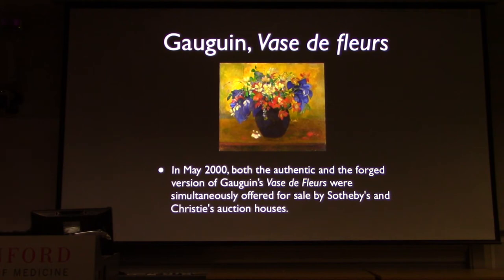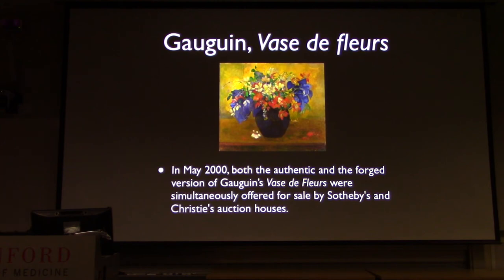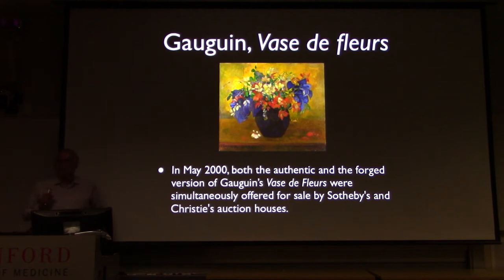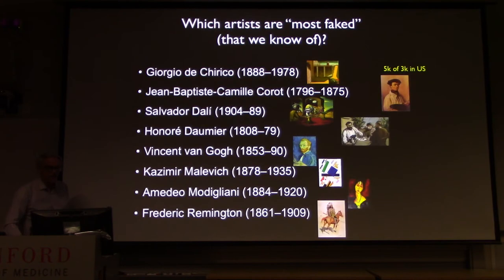Or here's Gauguin's Spades de Fleur — Days of Flowers. In May 2000, both an authentic version and a copy were simultaneously offered for sale by Sotheby's and Christie's auction houses, with catalogs coming out the same day both selling the same painting. Imagine if they had been offset by three months — whoever was second would of course have pulled it back and kept everything quiet. The people at Sotheby's and Christie's try to be very careful, but every once in a while, things get through.